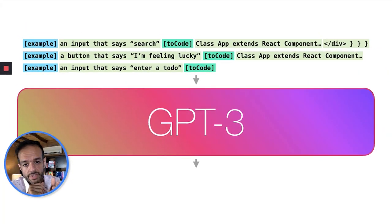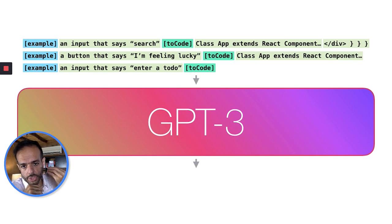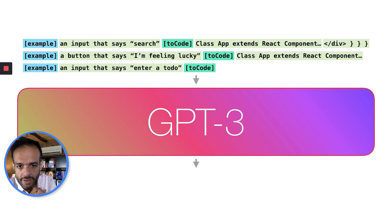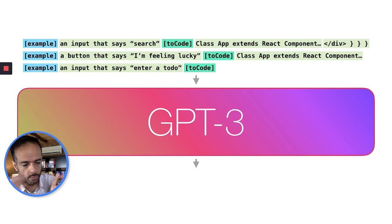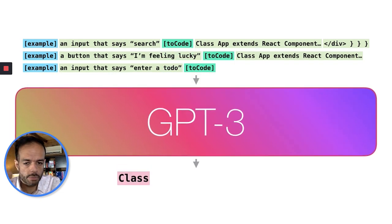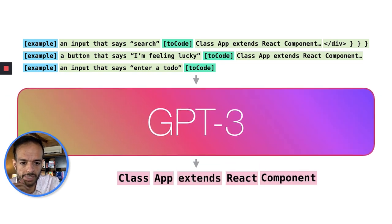In the React code generation example, my assumption is that the description is given as input to the model, but we also need to give it examples to prime the model — to let it know we're expecting React code when given a description. To do that, we give the model two, three, ten, or more examples of description-code pairs separated by special tokens. This is my assumption based on how GPT-2 and previous transformer language models have worked. We don't have an implementation to look at yet for GPT-3, but the input is processed token by token and the model generates its output accordingly.